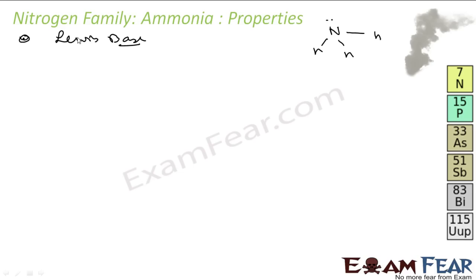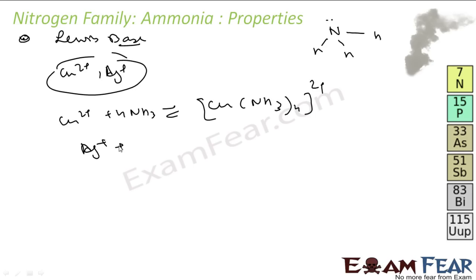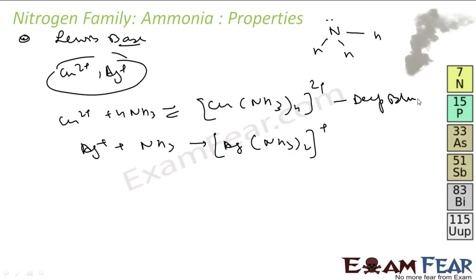Ammonia is a Lewis base because it has a lone pair of electrons which it can donate. It donates this lone pair to form linkages with metal ions, forming complexes. These complexes help in detecting metal ions — for example, copper ions form a deep blue complex, and silver ion reacts with NH3 to give [Ag(NH3)2]⁺, which is a colorless ion.